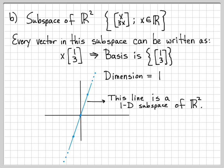So that concludes this example. We worked two quick examples of finding the dimension of a subspace. Both were straightforward because we could find a basis quickly. The dimension is always just the number of elements in the basis. In the first example, we had two vectors in the basis, so it was a two-dimensional subspace of R3. In the second example, we had one vector in the basis, so it was a one-dimensional subspace of R2.